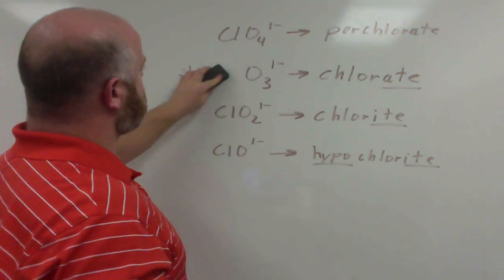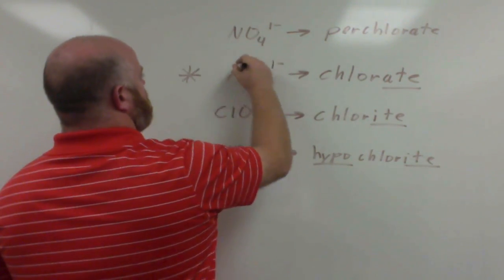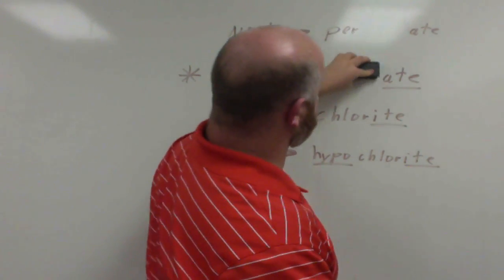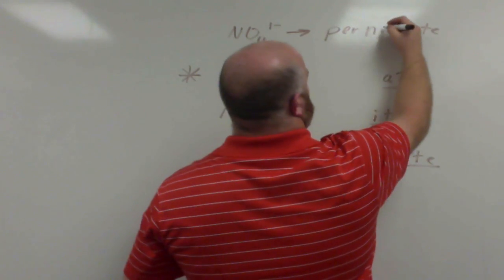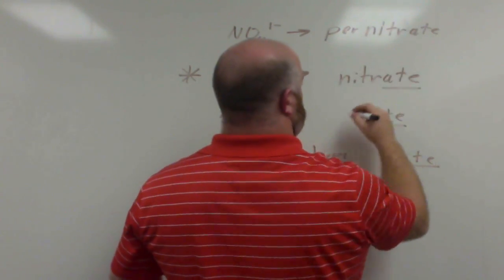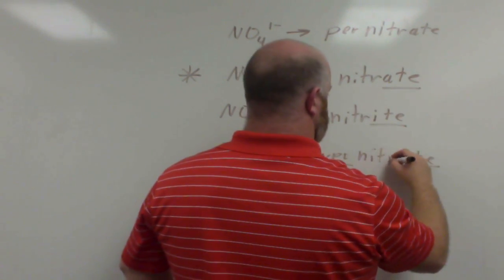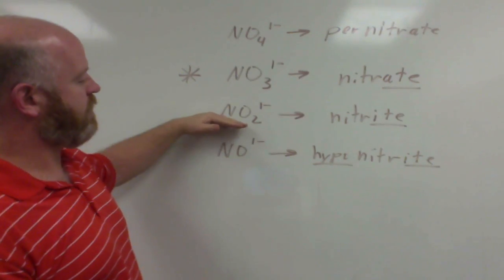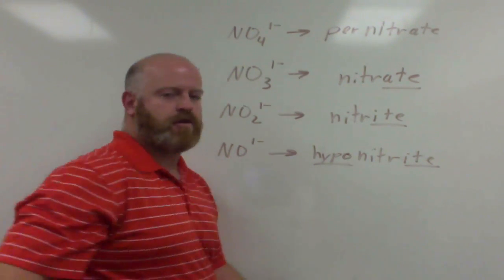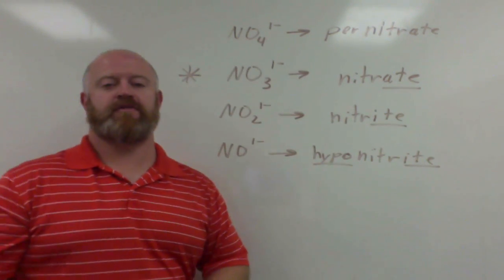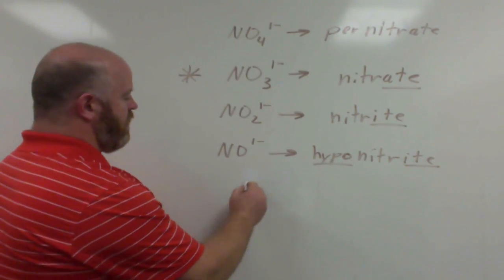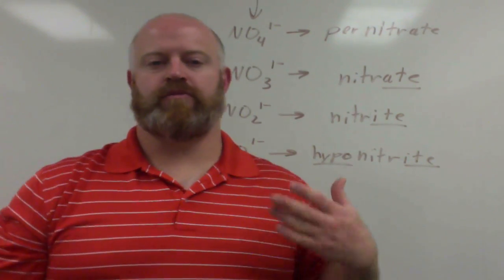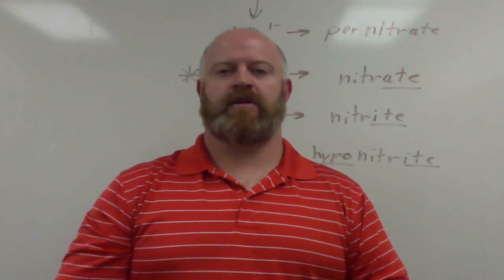We can change this for any of these. We can change this to nitrogen and our names, just the root of this just changes. So now, same system, same setup, but your nitrate goes to per nitrate, to nitrite, and hyponitrite. So once you learn the system, you can actually do this with any of those polyatomic ions that you've memorized going up and down. Obviously, it only works for ones that contain a lot of oxygen. So your hydroxide, your cyanide, your ammonium, they don't do these. It's only the six that have a lot of oxygen attached to them at the end.